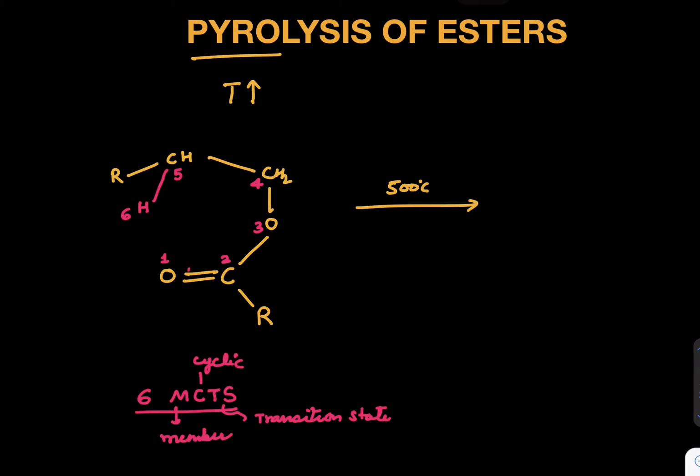What happens here is this oxygen grabs hydrogen, this becomes a double bond. And in the process, this will come up here. So if you look at the whole scenario, the structure will rearrange into RCH double bond CH2. This is O double bond C, single bond R, and this is single bond O that grabbed hydrogen.